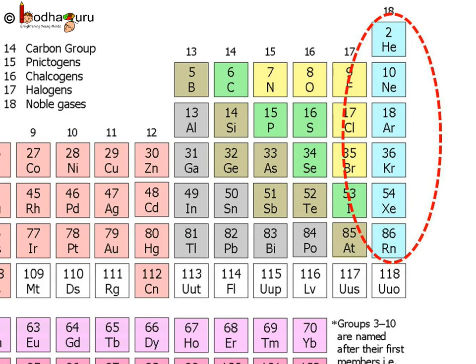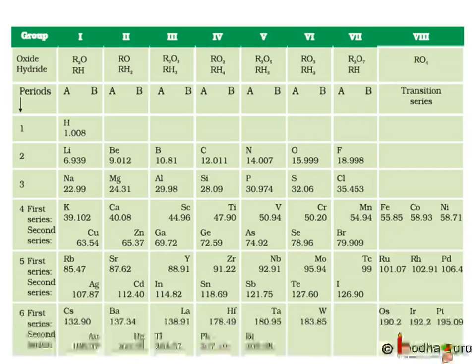Later, noble gases were discovered and added to Mendeleev's periodic table in a new group without disturbing the existing order. So one of the strengths of Mendeleev's periodic table was that when these gases were discovered, they could be placed in a new group without disturbing the existing order.